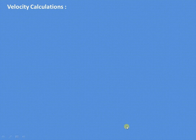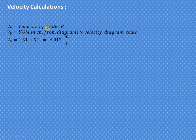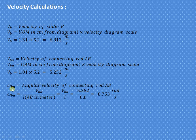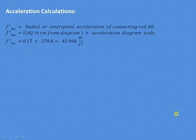For velocity calculations: velocity of the slider = length OM × velocity scale = 1.31 × 5.2 = required value. Velocity of the connecting rod = length AM × velocity scale = 1.01 × 5.2. For the angular velocity of the connecting rod, since v = r × ω, we get ω = v ÷ r, where v is the velocity of B and the connecting rod length is 0.6 meters.